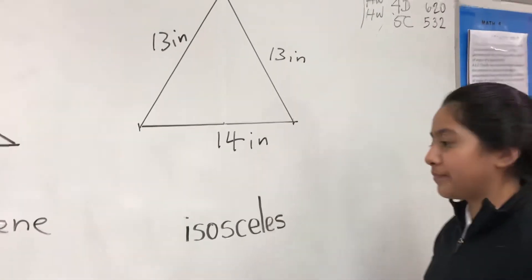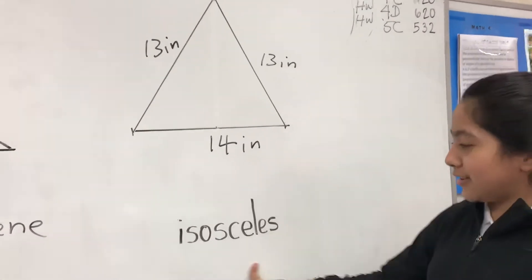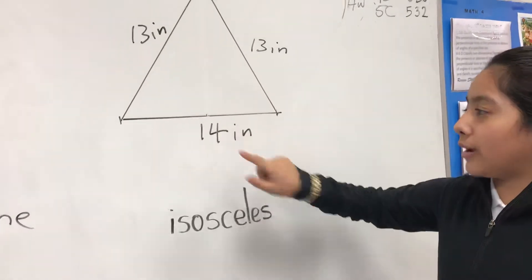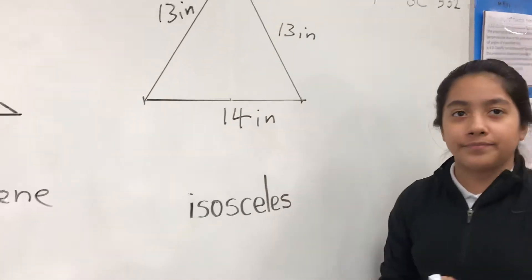What about this triangle? This triangle is isosceles because two sides are equal and one is different. Yes, okay.